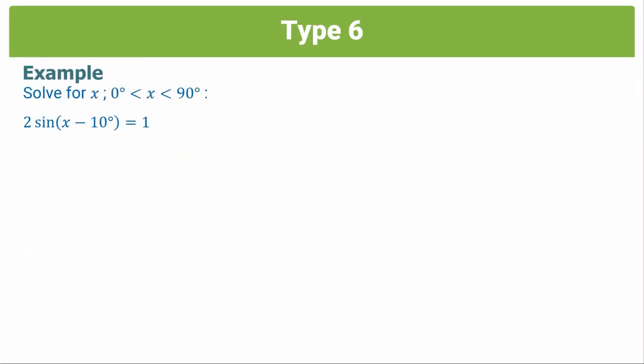In this example, we are told to solve for x, and x is our angle here, and we've been told that it's between 0 and 90 degrees. So again, it's a Grade 10 type of question, because you're not looking at the third, fourth, or second quadrants.